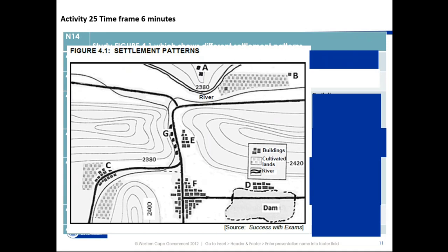That is a nucleated settlement because there are many buildings grouped together in that area. Then we're going to go to number E. E is the name of the settlement — it is a little bit difficult because it has to do with your network. Look deeply and you see there is some kind of landform — there's an opening between two landforms.